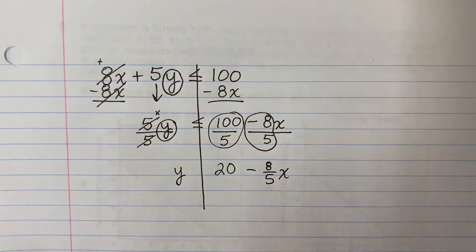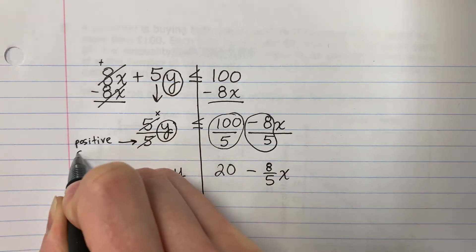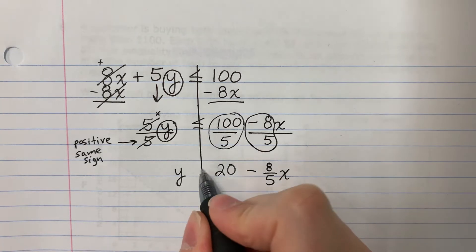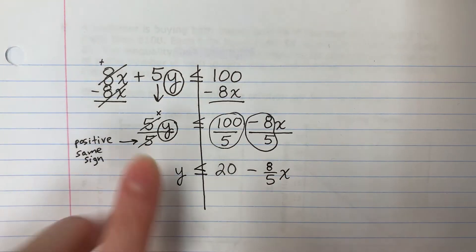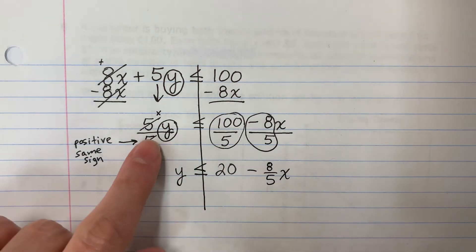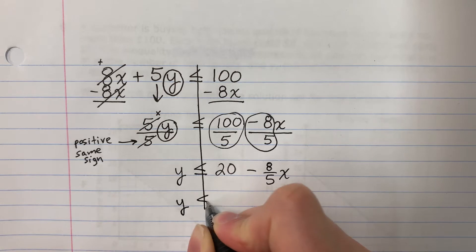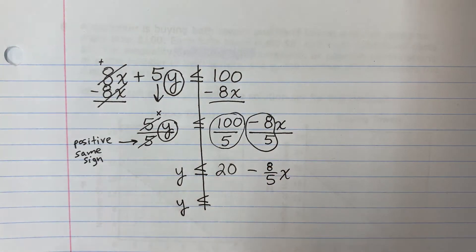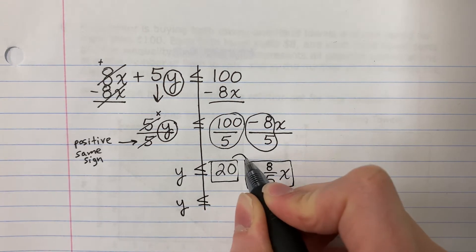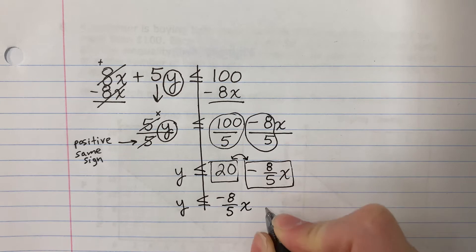Now for the sign. If the number that is down is positive, it's the same sign. Si el número que está abajo es positivo, necesito el mismo signo. If it's negative, you switch. But in this case, the same, because this number is positive. The final part, I need to go ahead and switch these. I need the letter in the front. So negative 8 fifths x, positive 20.